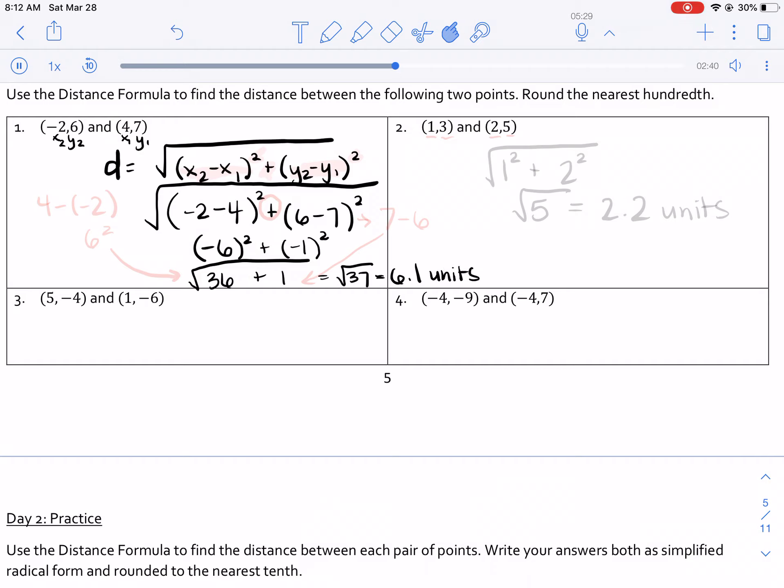Now here's where the magic happens. If you were to write this first number the other way, 4 minus negative 2, you would get 6 squared, which still gets you 36. And then if you were to do this one, 7 minus 6, you would get 1 squared, which still equals 1.